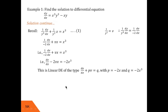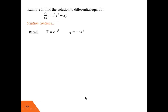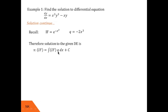To solve this linear DE, we find the integrating factor e^(∫P dx). With P = −2x, we get e^(∫−2x dx) = e^(−x²). We substitute this integrating factor into the general solution formula: v · e^(−x²) = ∫e^(−x²) · (−2x³) dx + C.